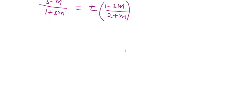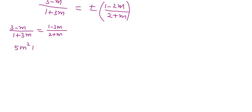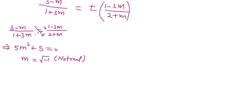There are 2 cases. In the first case, taking the plus sign: (3 minus m) upon (1 plus 3m) equals (1 minus 2m) upon (2 plus m). After cross multiplication, we get 5m squared plus 5 equals 0, which gives m equals root of minus 1. This is not real, so this case is not possible.